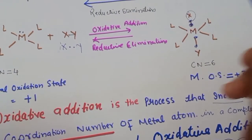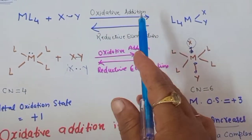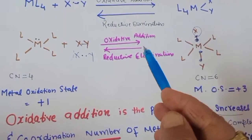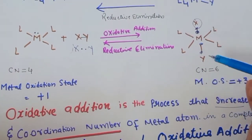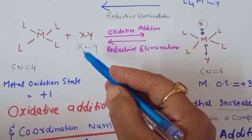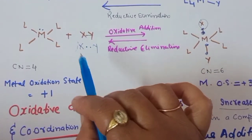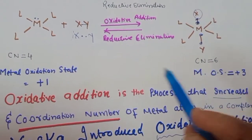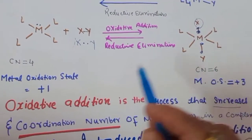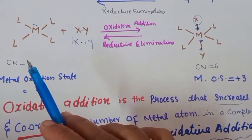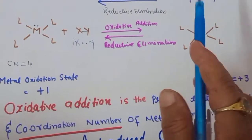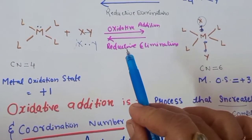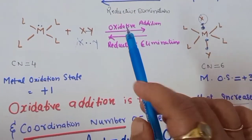Now we will talk about reductive elimination — it is the reverse of oxidative addition. In a complex with coordination number 6, the two anionic ligands X and Y take their own electrons and form a neutral molecule XY. The coordination number reduces to 4, and the oxidation state changes from +3 to +1. The metal gets reduced by gaining two electrons — the anionic ligands return the electrons they took during oxidative addition.